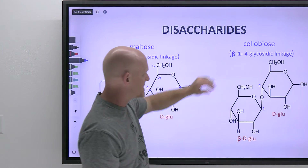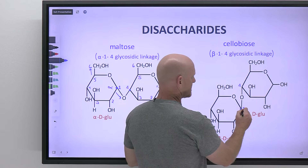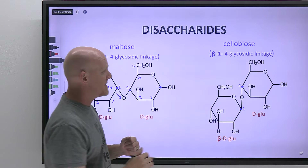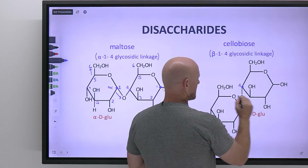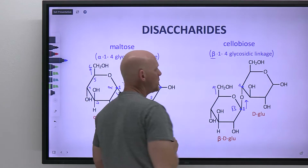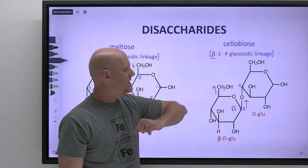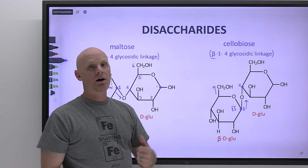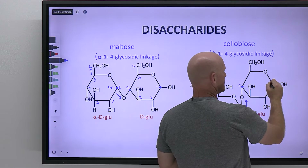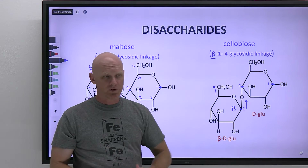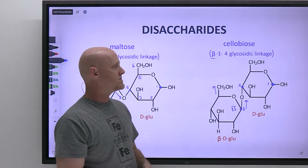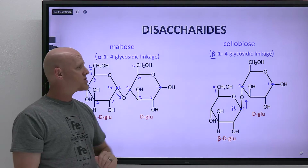Cellobiose also has a 1,4 linkage between carbon one of one glucose and carbon four of the other. But relative to carbon one here — the anomeric carbon — the oxygen points up and the CH₂OH group also points up. That is beta, making it a beta-1,4 glycosidic linkage. Carbon four of the second monosaccharide is not the anomeric carbon, so there's no alpha or beta there. The anomeric carbon on the second glucose is in its hemiacetal form, so mutarotation takes place in solution — which is why it's also a reducing sugar. Both maltose and cellobiose are indeed reducing sugars.